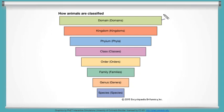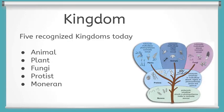Let's take a look at what each of these levels means more specifically, and how living things are grouped into them. A kingdom is the broadest classification for eukaryotic life on Earth. There are five recognized kingdoms today.